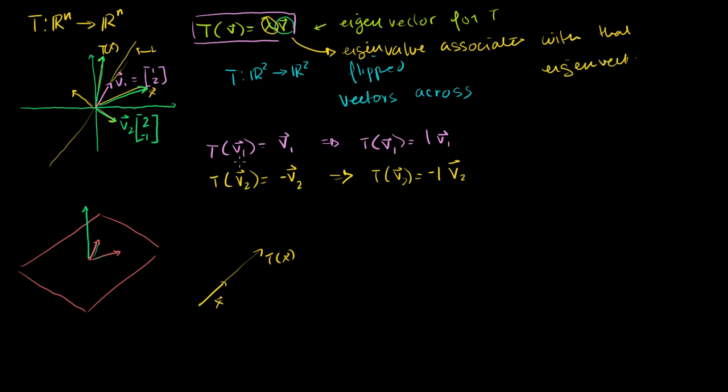So in the example I just gave where the transformation is flipping around this line, V1, the vector 1, 2, is an eigenvector of our transformation. And its corresponding eigenvalue is 1.